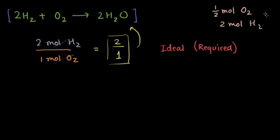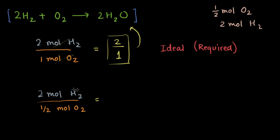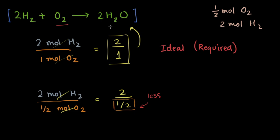Let's calculate the mole ratio for this. You have two moles of hydrogen reacting with half a mole of oxygen, so the ratio is 2 over 0.5. Comparing the ideal ratio to the actual ratio, you'll see that the amount of oxygen reacting with hydrogen is less than required, which means oxygen is the limiting reagent.